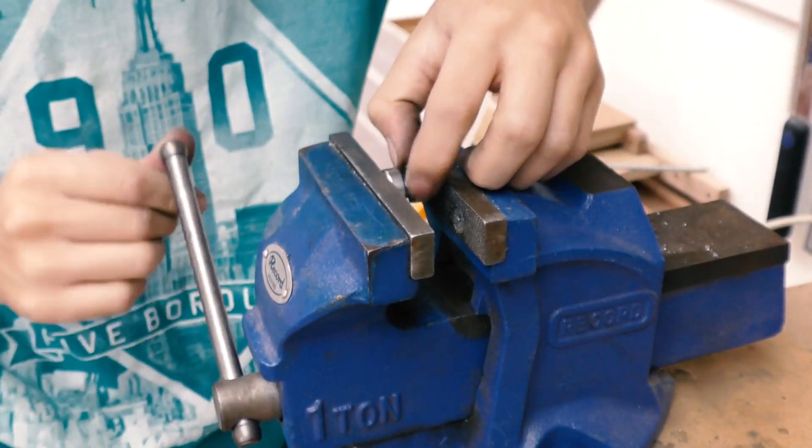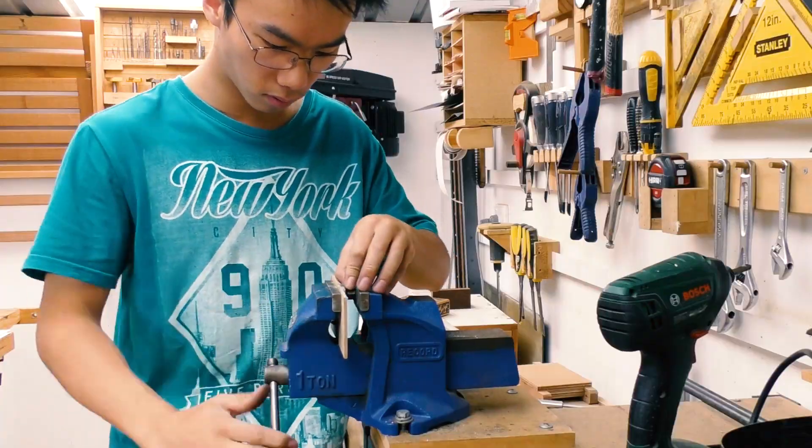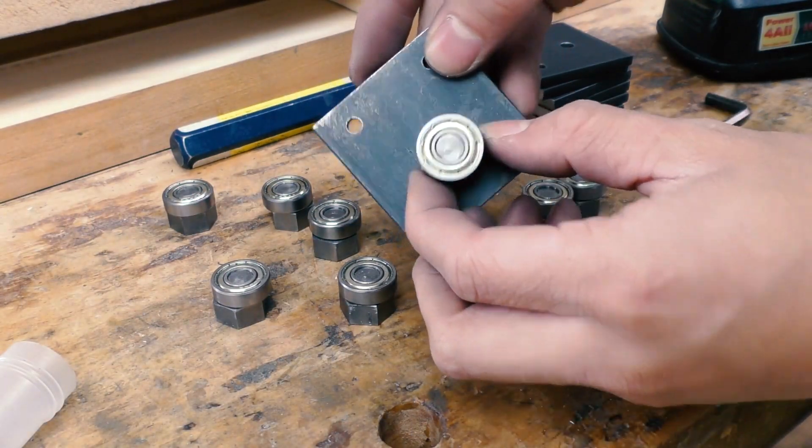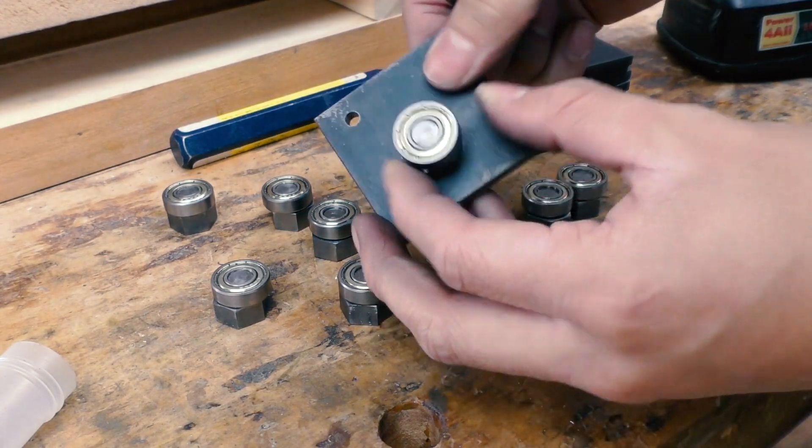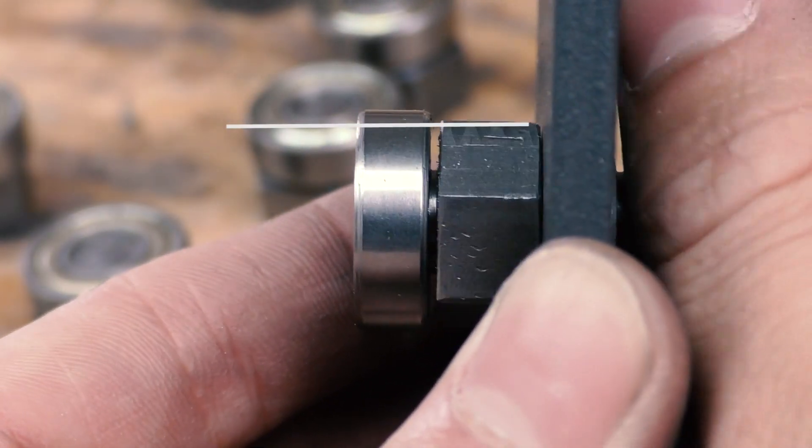Time to press the bearings in. And so the adjustment nut basically acts as a cam because it's off-centered, so depending on which way I turn the nuts, it will raise or lower the bearing.